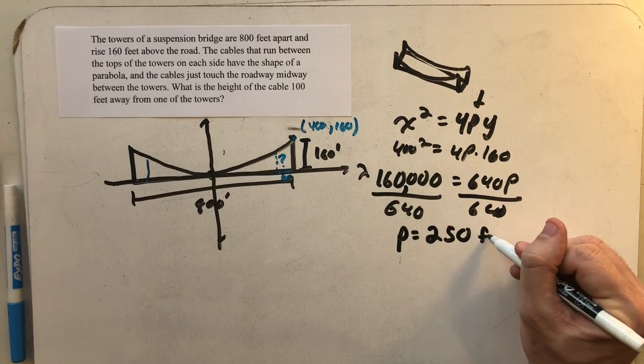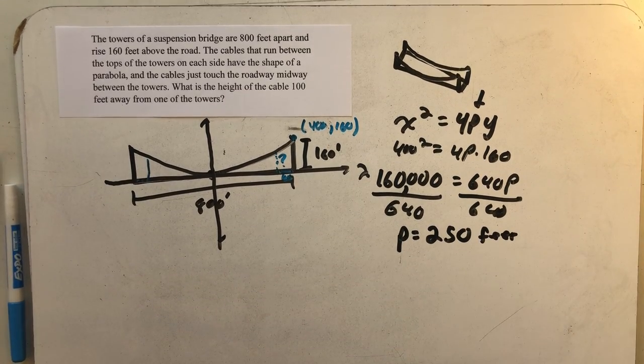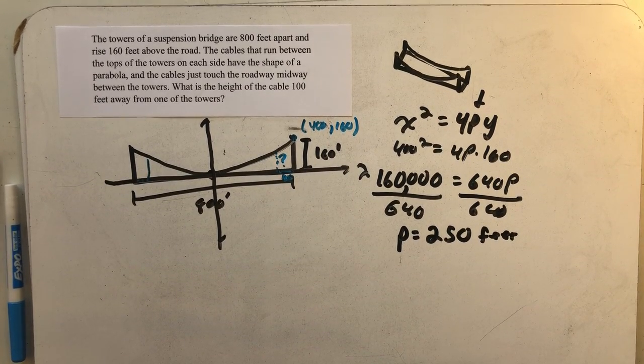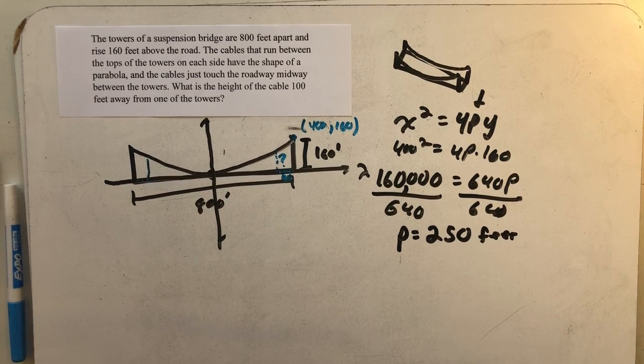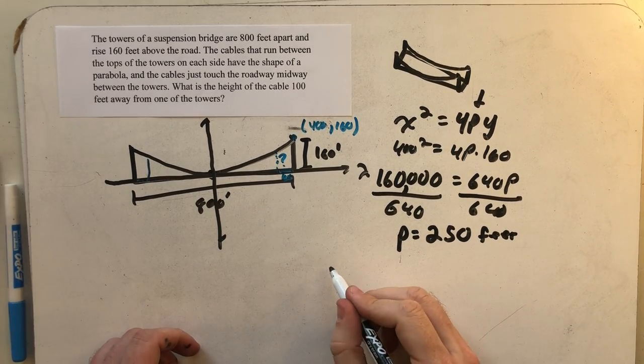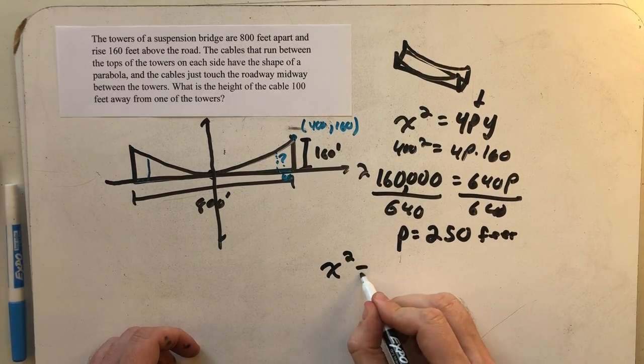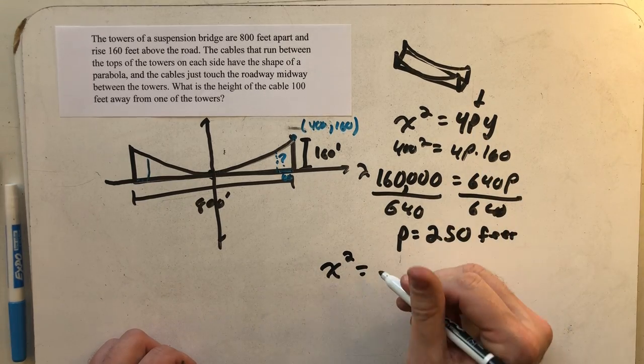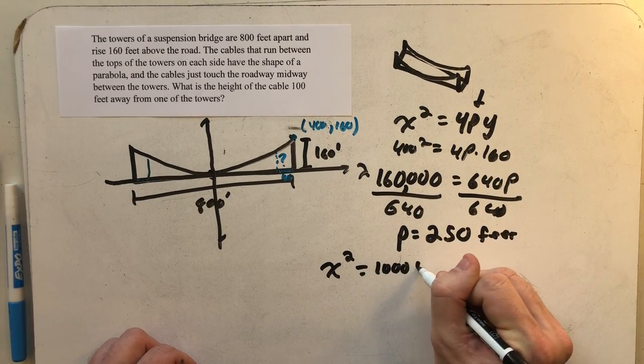Very technically that would be in feet because p is the distance between a vertex and a focus. But for this particular problem, we don't actually need to find the focus. This is x squared equals 4 times that 250, so 1,000y.